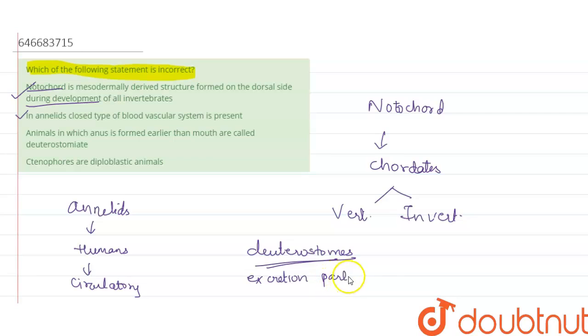Now here they have mentioned tenophores are diploblastic animals. This statement is somewhat incorrect. I'll tell you the reason. Most of the children get confused here. Whenever they talk about tenophores, earlier they were called as diploblastic only.